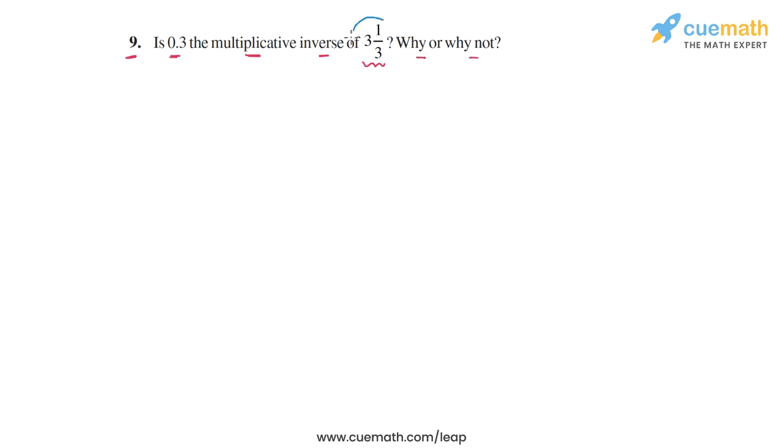So let's first consider this rational number 3 and 1 by 3. This is written in mixed form, mixed fraction form. Let's write it in the standard rational number form P by Q.